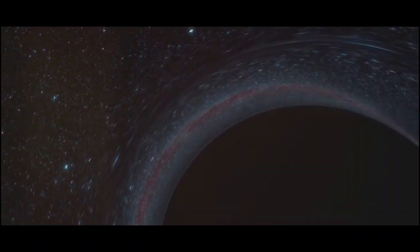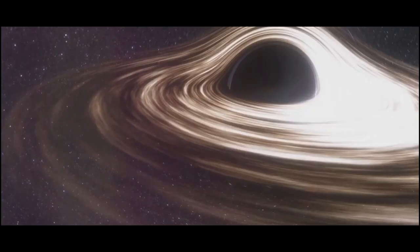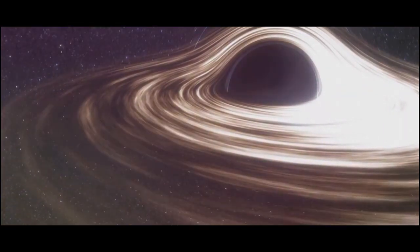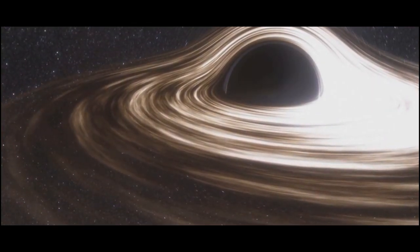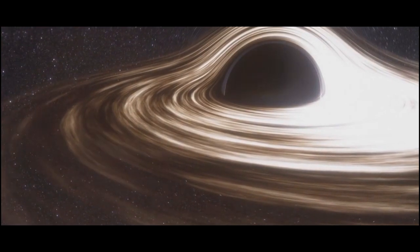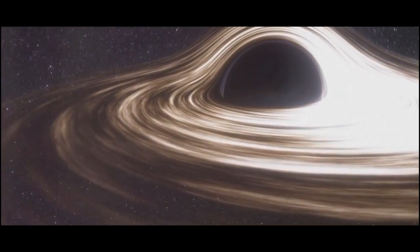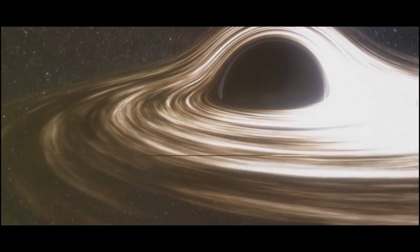Black holes come in a few types: stellar, supermassive, and intermediate. Stellar black holes form from collapsing stars. Supermassive black holes, millions or even billions times the mass of our sun, lurk at the center of galaxies. And intermediate black holes, which are a middle ground between the other two types, are still a topic of ongoing research. Black holes, the cosmic beasts, are indeed fascinating, aren't they?